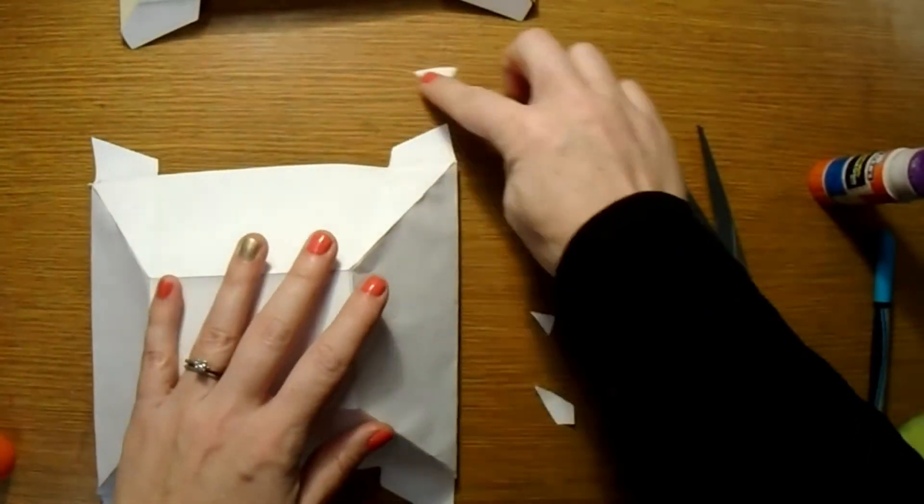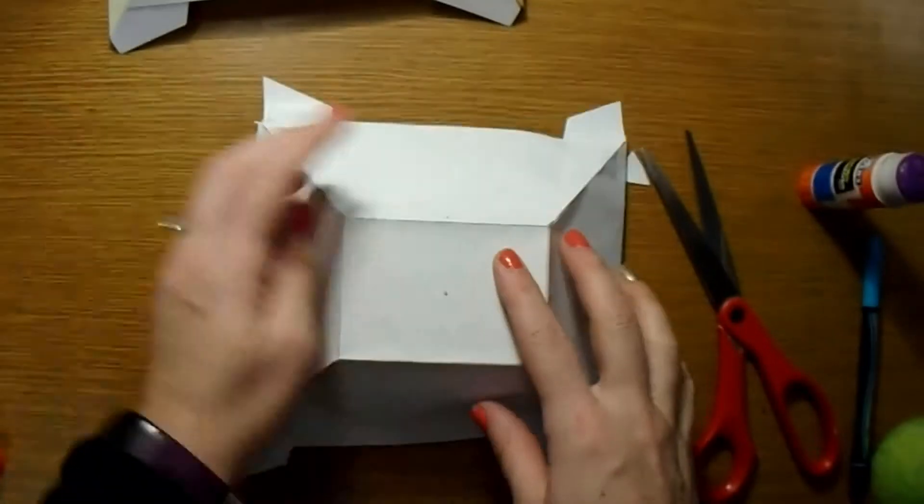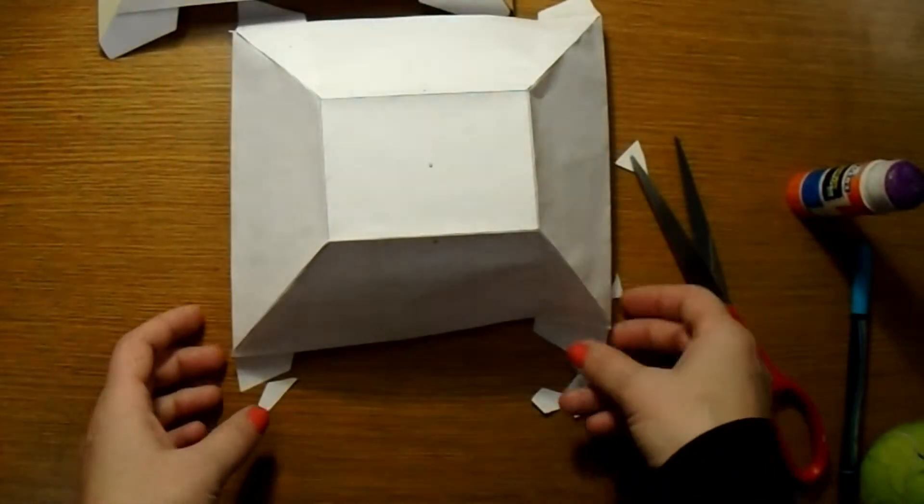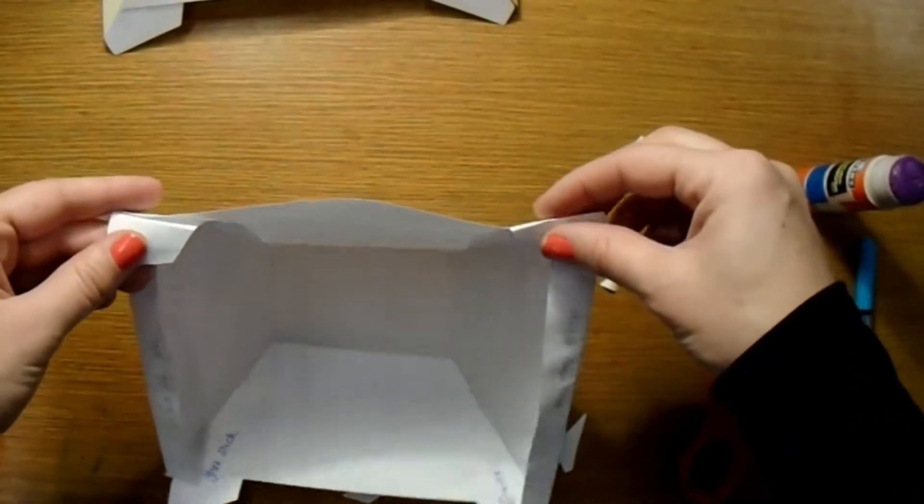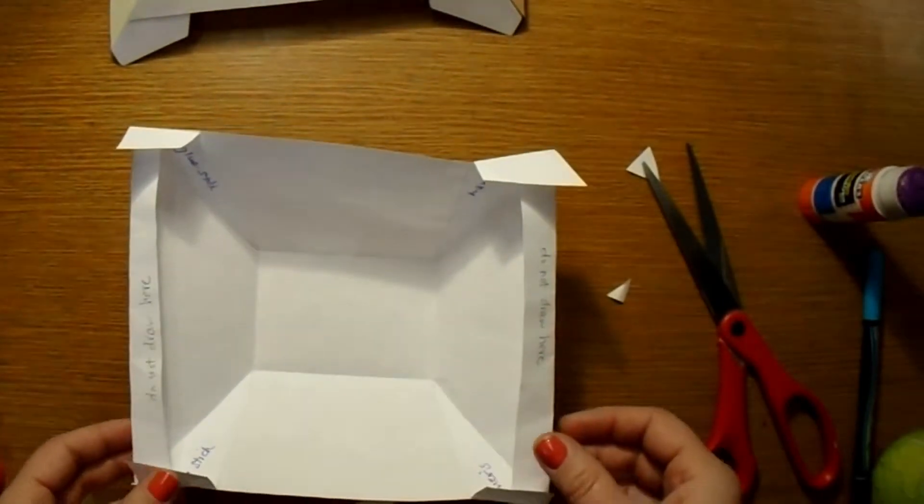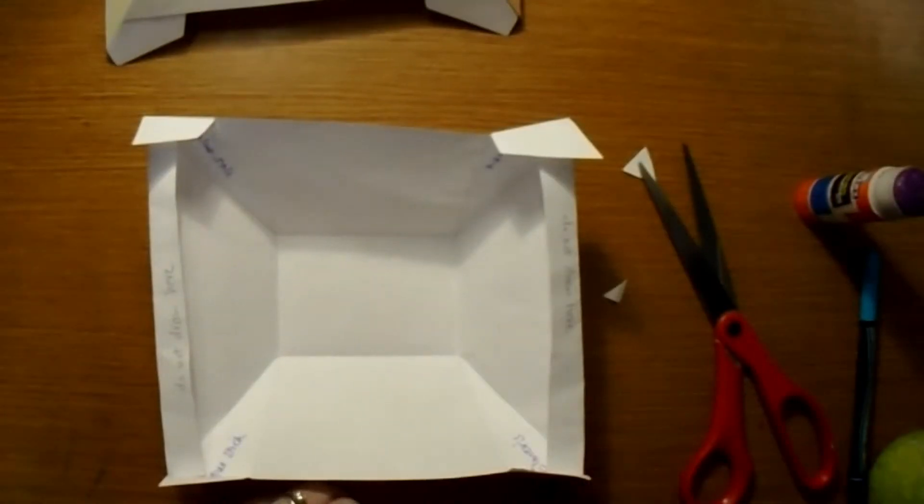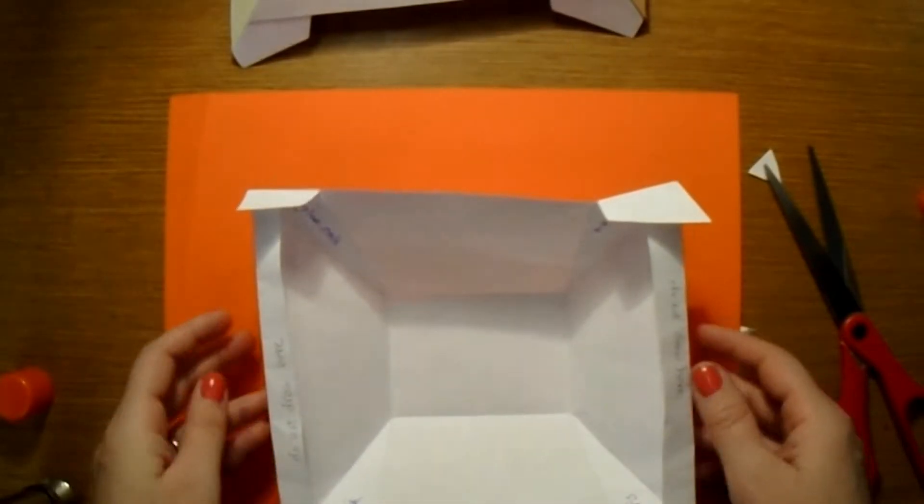So when I open those tabs, it should now be in a straight line all the way down on both sides. Those tabs are going to get folded back underneath. So now when you look at it from the bottom, you've got these extra pieces that are going to be used to help glue down this to your background paper.